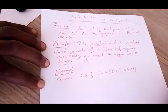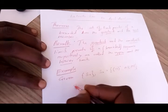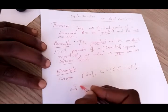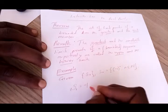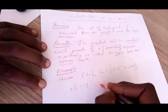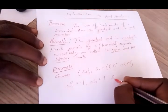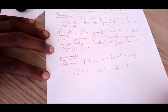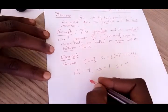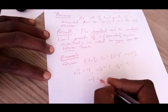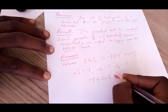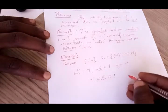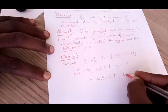We need to understand that this sequence is bounded. If n = 1 then Sn = -1; if n = 2 then Sn = 1; if n = 3 then Sn = -1, and so on. So this sequence satisfies -1 ≤ Sn ≤ 1, which confirms that this sequence is bounded for all values of n in the natural numbers.